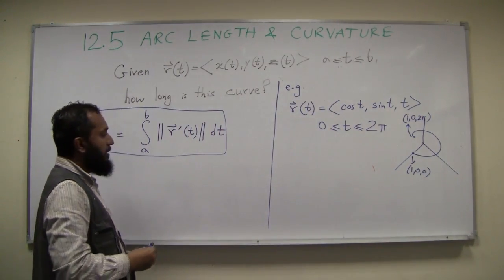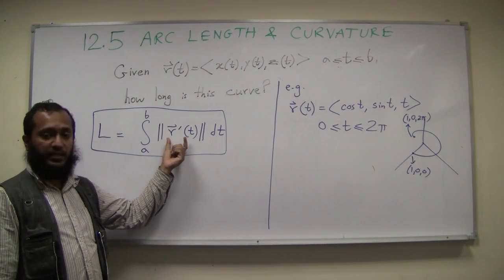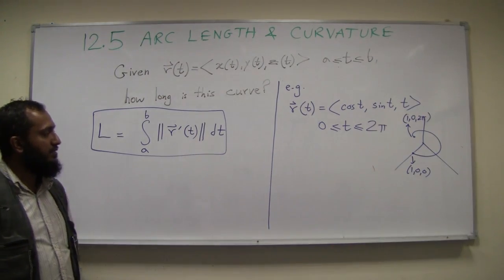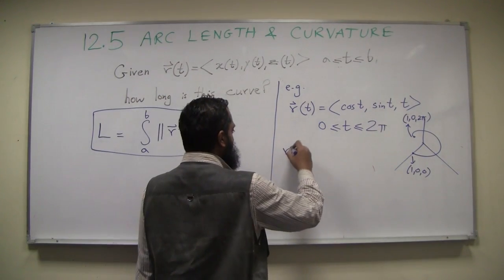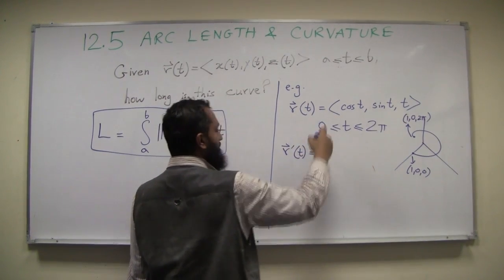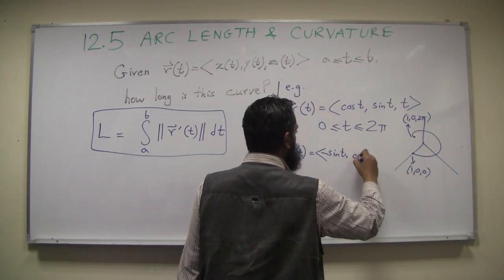So the question is, let's calculate how long this is. How are we going to do that? First thing we have to do is find the tangent vector, the derivative vector of this parameterization. So r'(t) is: negative sine t, cosine t, and derivative of t is 1.